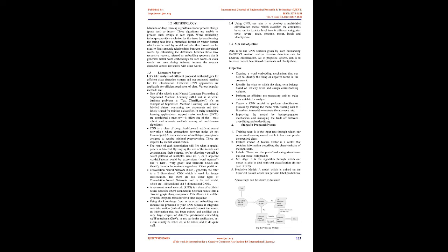CNN is a class of deep, feed-forward artificial neural networks where connections between nodes do not form a cycle, and use a variation of multi-layer perceptrons designed to require minimal pre-processing. These are inspired by the animal visual cortex. The result of each convolution will fire when a special pattern is detected. By varying the size of the kernels and concatenating their outputs, you're allowing yourself to detect patterns of multiple sizes — two, three, or five adjacent words. These patterns could be expressions or word n-grams, like 'I hate' or 'very good', and therefore CNNs can identify them in the sentence regardless of their position.